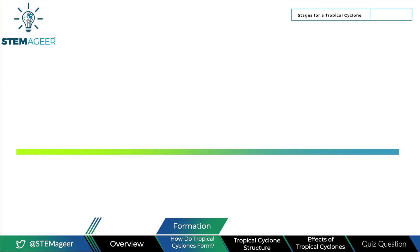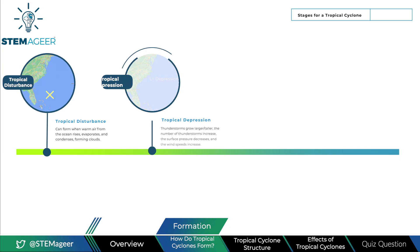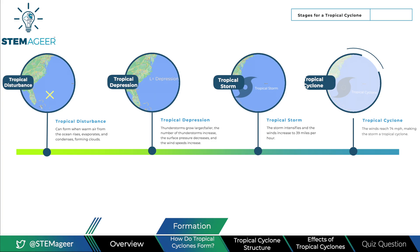According to NOAA, the stages of development are the tropical disturbance, then the tropical depression, after that the tropical storm, and finally the tropical cyclone. A tropical disturbance can form when warm air from the ocean rises, evaporates, and condenses, forming clouds. This cycle of evaporation and condensation can cause the clouds to grow taller and also causes circulation that revolves around the center. Eventually, a group of thunderstorm clouds forms, and if the conditions are right, a tropical depression may form.